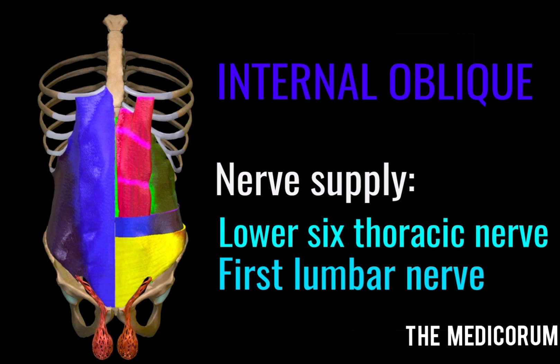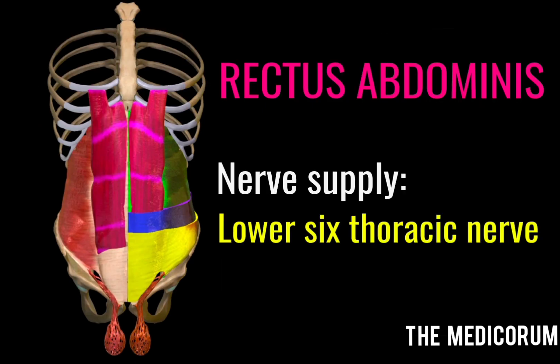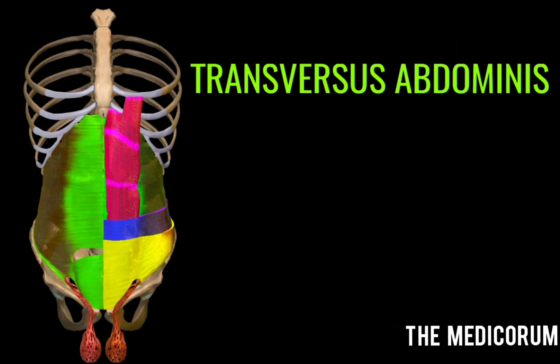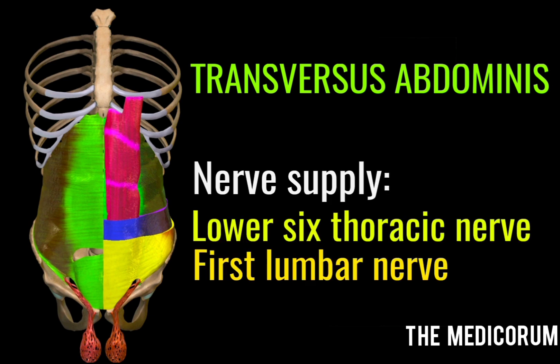The third one is the rectus abdominis. It is also supplied by the lower sixth thoracic nerve. And the fourth one is the transverse abdominis. It is supplied by the lower sixth thoracic nerve and the first lumbar nerve.